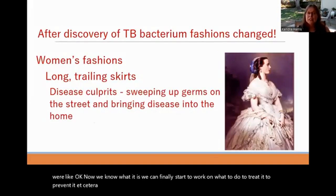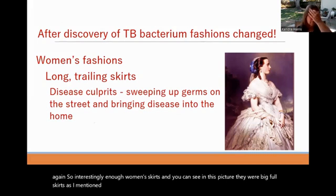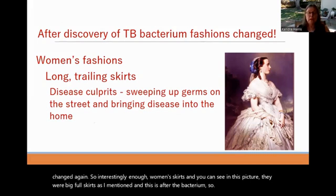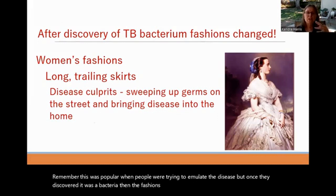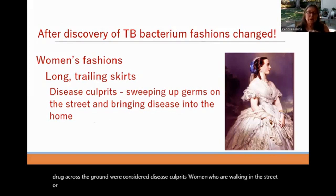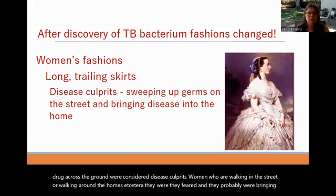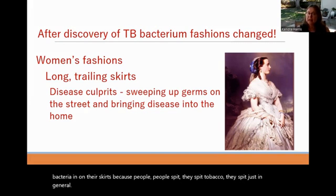After the discovery of the tuberculosis bacterium, fashions changed again. Women's skirts — the big, full, wide trailing skirts that dragged across the ground — were considered disease culprits. Women walking in streets were feared to be bringing bacteria in on their skirts, because people spit tobacco and just in general. TB can survive in spit for an entire day, so they were not wrong. By 1910, skirt lengths had risen significantly, going from long trailing designs to shorter hemlines.